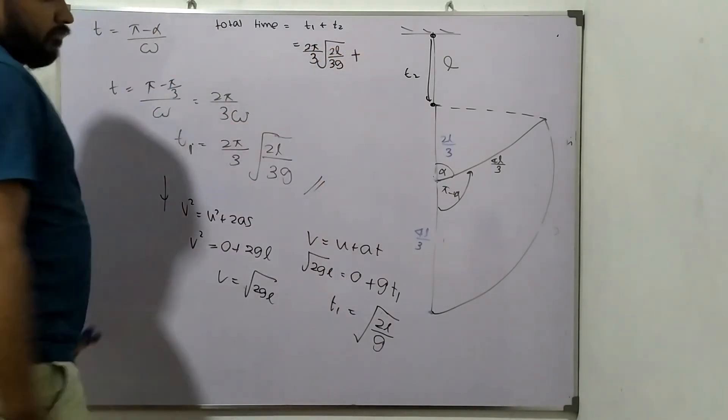So then, the total time, T1 plus T2, 2 pi over 3, 2L over 3G, plus 2L over G. So you can take square root 2L over G out, 1 plus 2 pi over 3 root 3. So this is the total time for the complete motion.